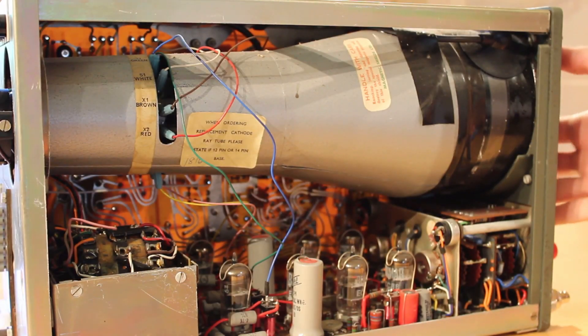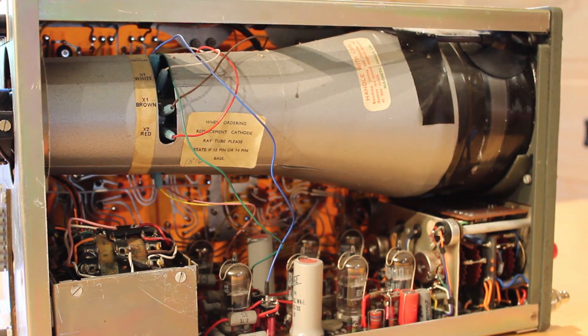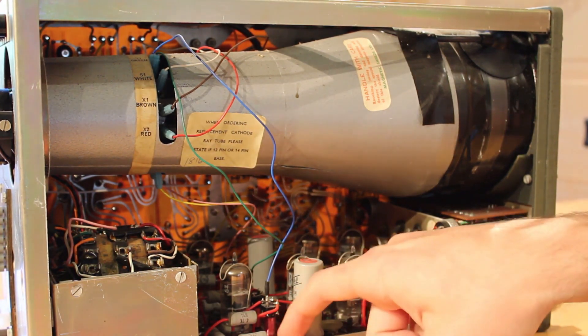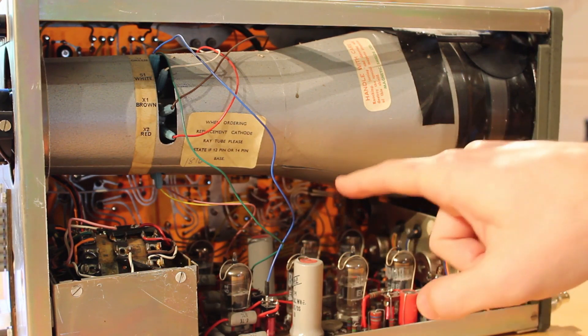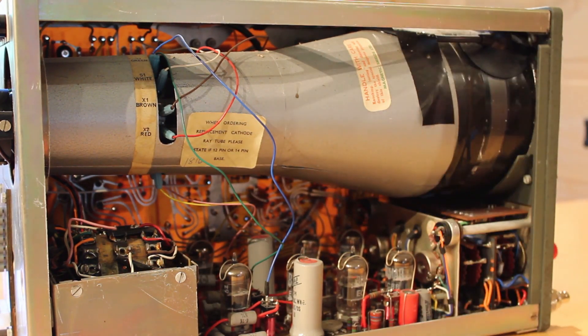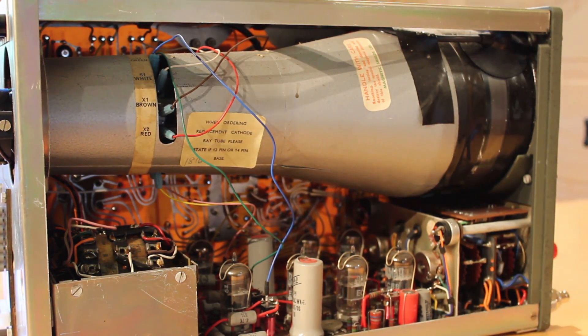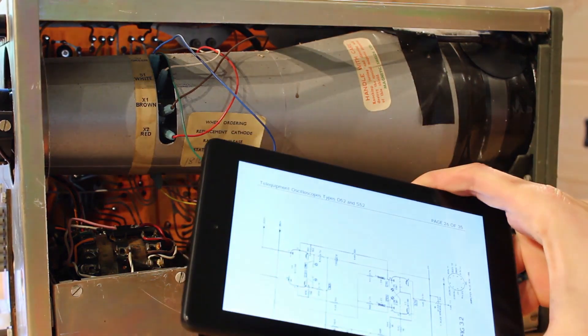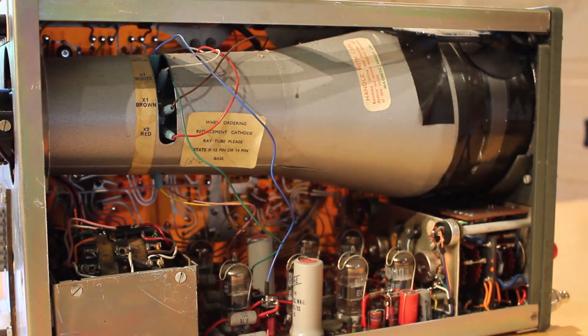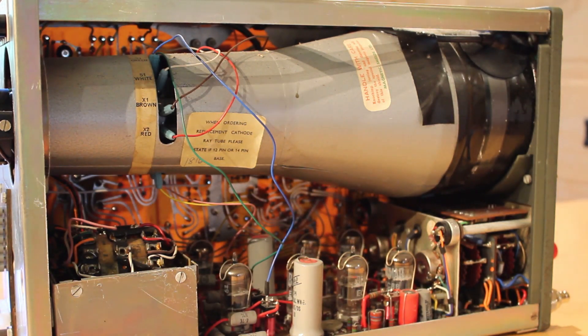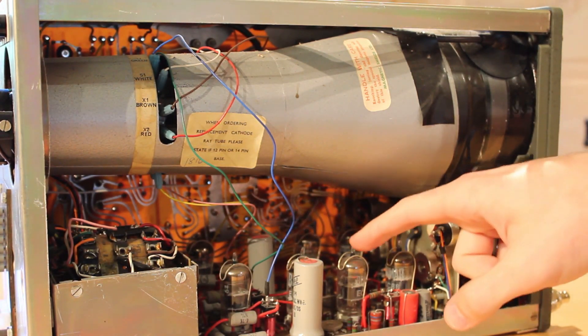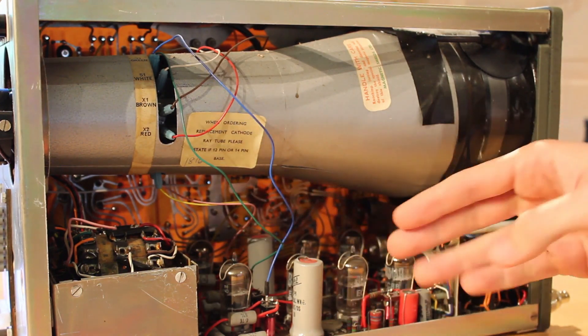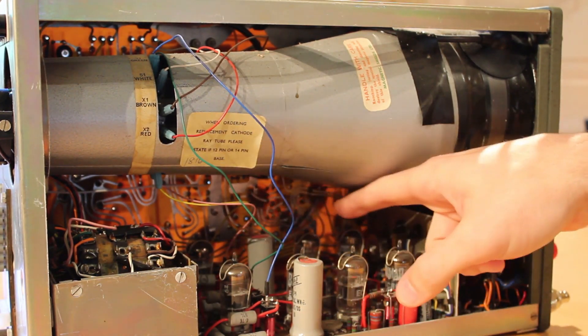And here it is with the cover taken off. And man, it is just beautiful inside of there. There's two PCBs. There's this one here on the bottom and then you can see the other PCB on the back. And we'll flip this around and take a look at that other PCB here in a minute. But I've been looking at the inside of this and digging through the schematic, which I happen to have right here on my little tablet.